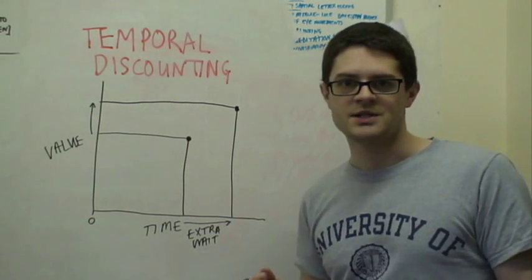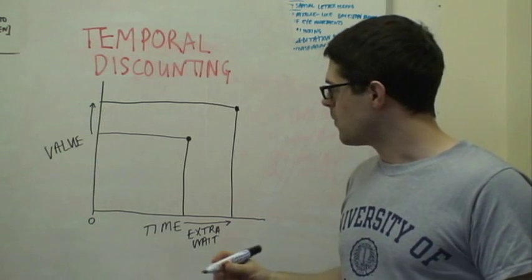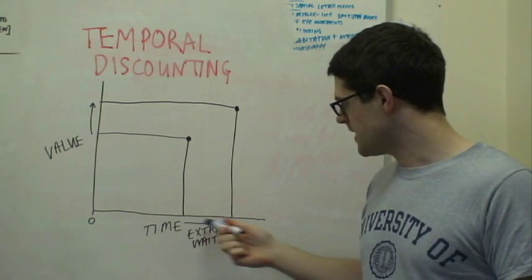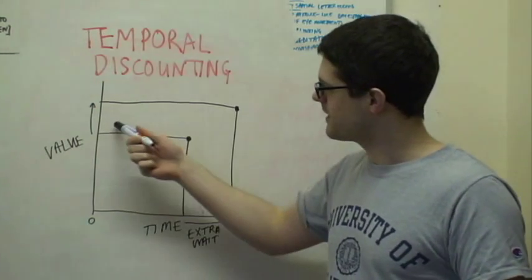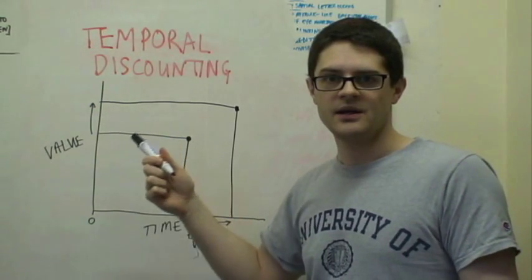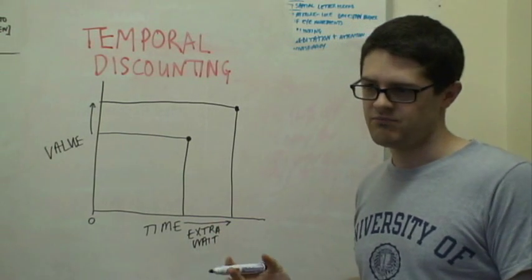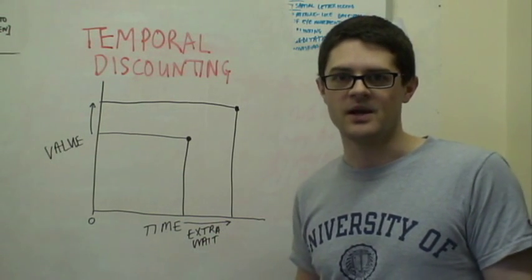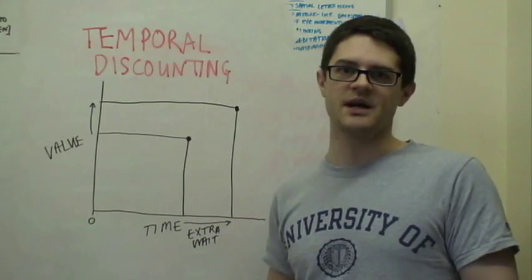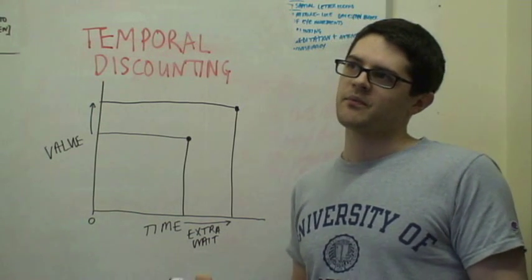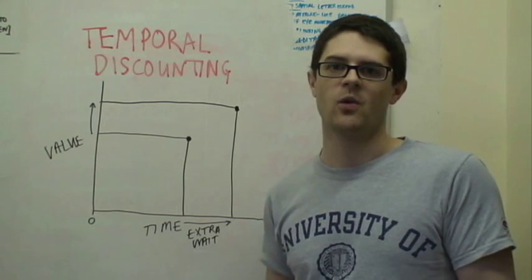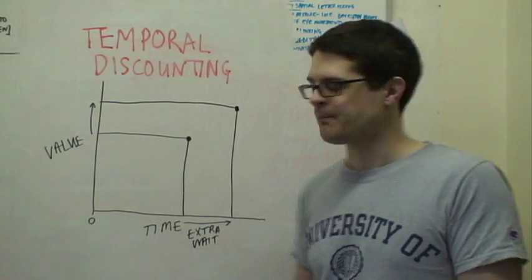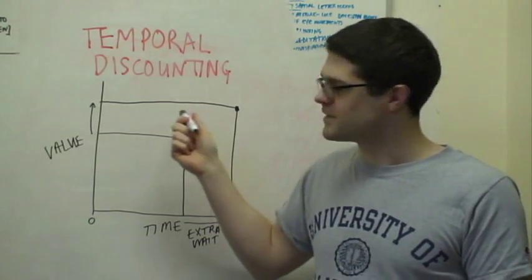That might be slightly strange. Let's consider an example where the extra time you have to wait is 50 years, but the extra value you get is £1. I don't think I'm going to wait an extra 50 years to get £101 rather than just wait one minute and get £100. So, this is a bit weird.